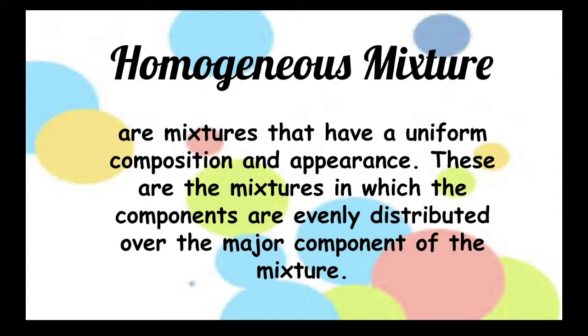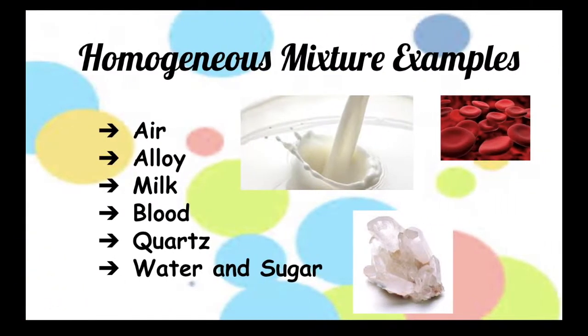Let's take a look at examples of homogeneous mixtures. Air is an example of homogeneous mixture. Why? It's because it is made up of different gases that are so thoroughly mixed together that they appear uniform. Another example of this mixture is an alloy. Alloys are made up when two or more metals are mixed together.